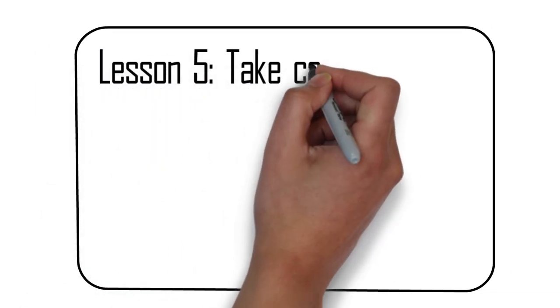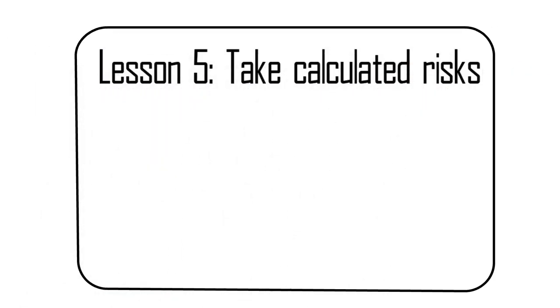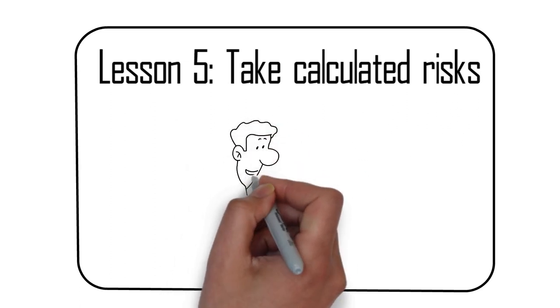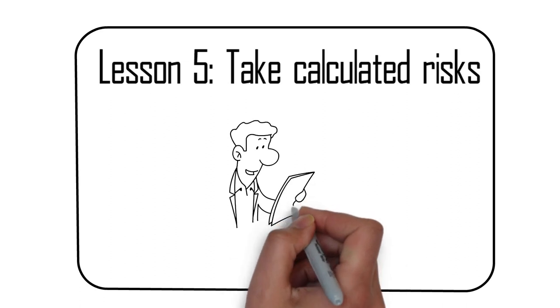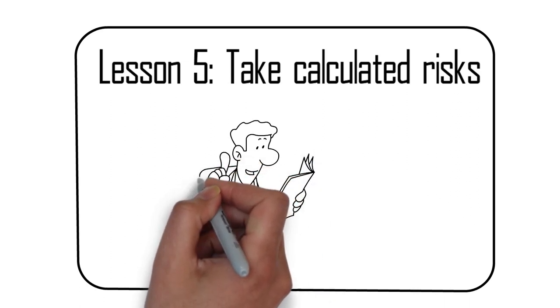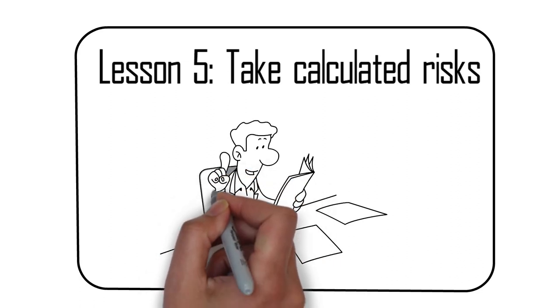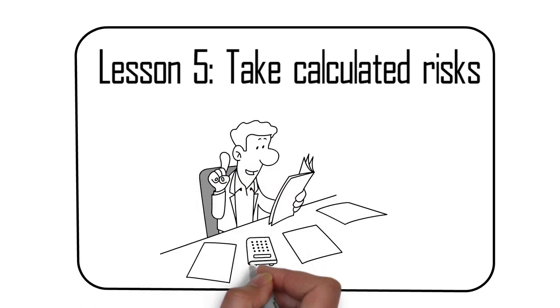Lesson 5: Take Calculated Risks. The fifth and final lesson from the book is the importance of taking calculated risks. DeMarco argues that in order to achieve financial freedom you need to be willing to take calculated risks that are backed by a solid understanding of your business and the market. This means that you need to be willing to take bold action and embrace uncertainty in pursuit of your goals.